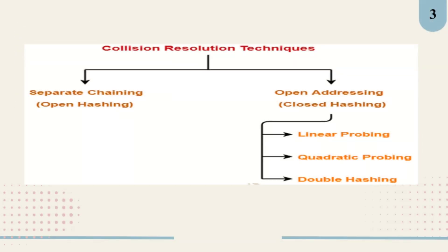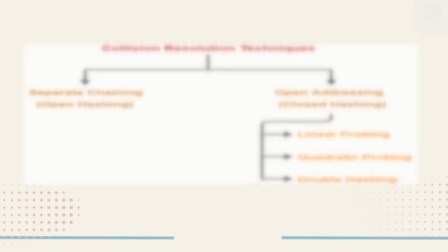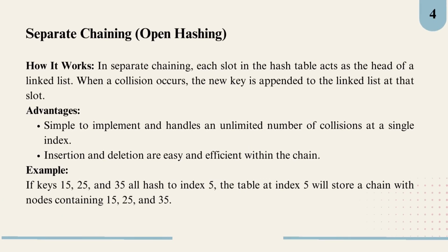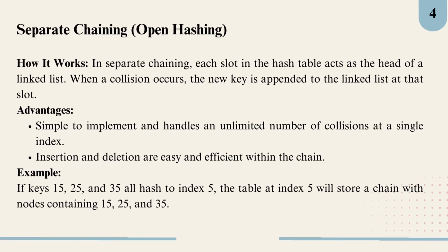Here the image shows the classification of collision resolution techniques into two types: separate chaining and open addressing. And in open addressing, we have three methods: linear probing, quadratic probing, and double hashing.